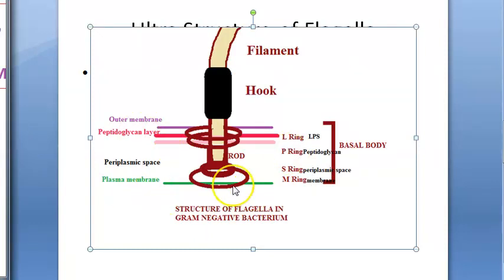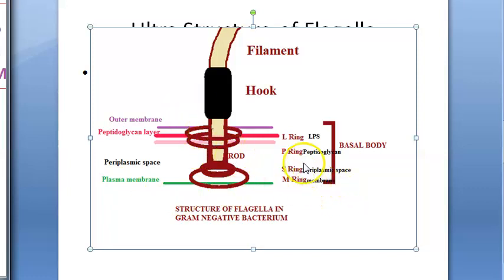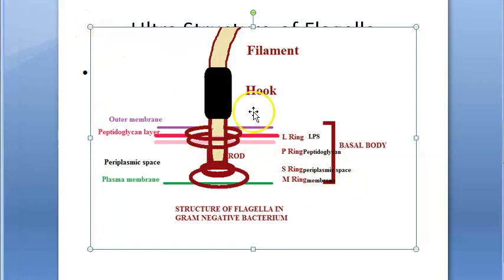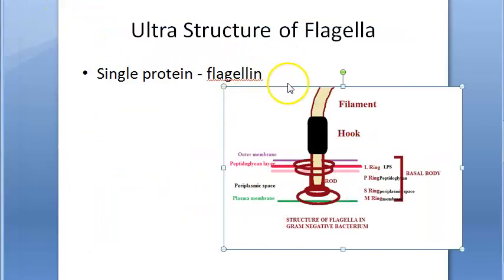In gram-positive bacteria there are only two basal body rings: the inner ring attached to the plasma membrane and the outer ring attached to the peptidoglycan layer.